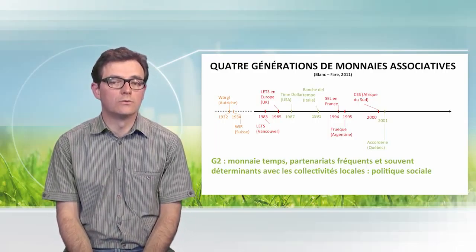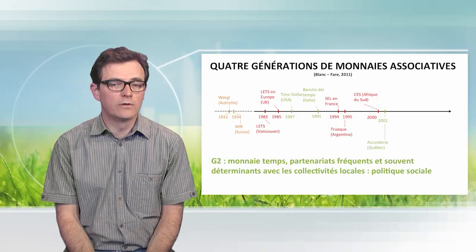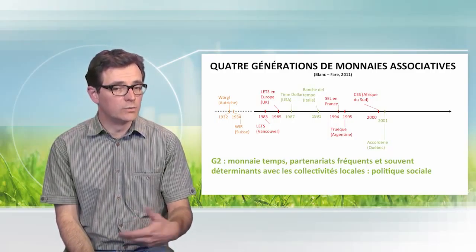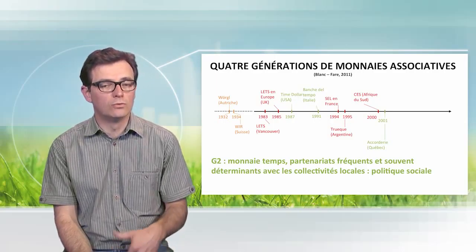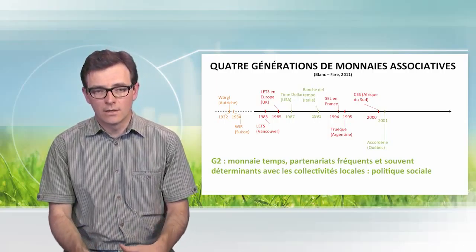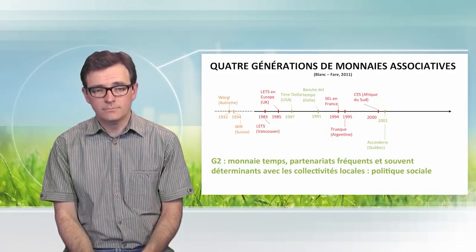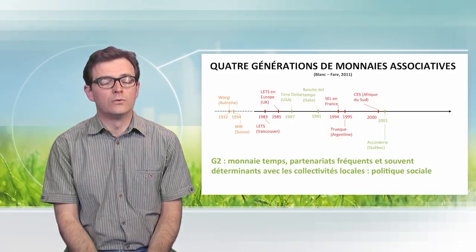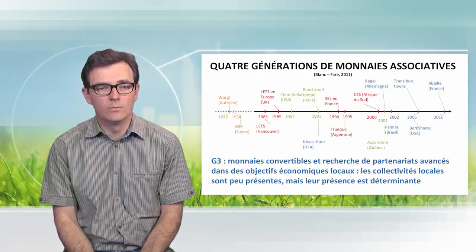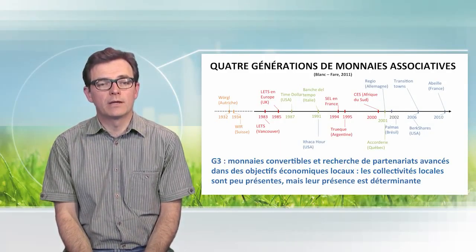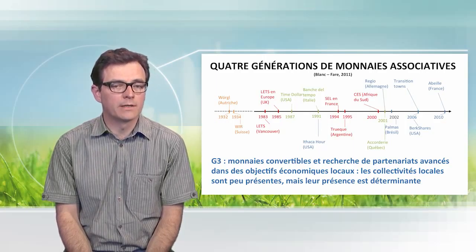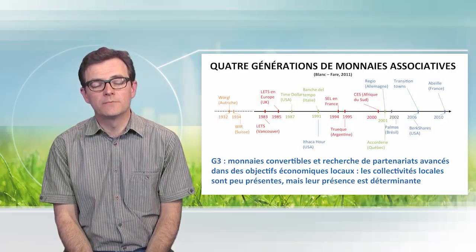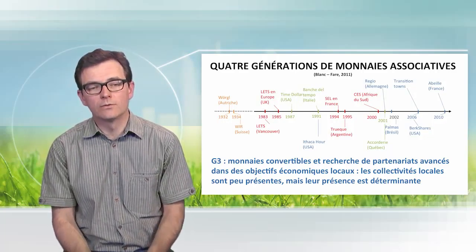The Time Dollar is a time currency, discovered in France in the early 2000s with the Accorderie — a French translation of an initiative which originated from Quebec. Again, it is an inconvertible currency, simply counting services based on a criterion of time — the time necessary to perform the service.